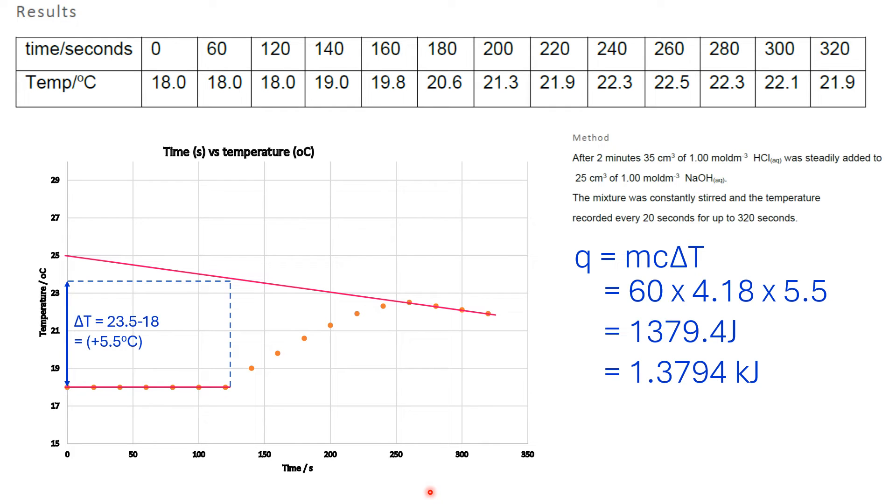So it works out at 5.5—an increase of 5.5 degrees. That's where the 5.5 comes in as ΔT. Obviously, 60 is the 25 plus the 35 together.